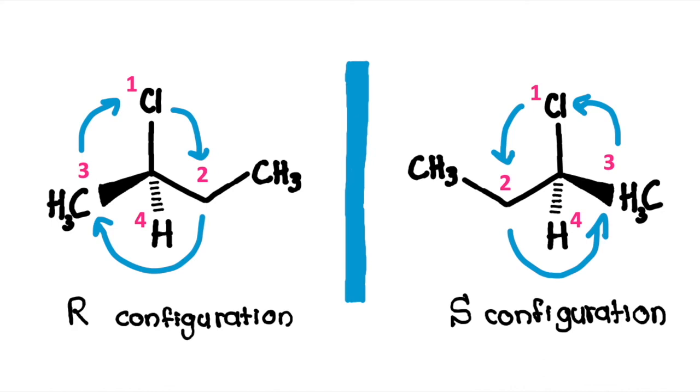Molecules with opposite configurations, that is S and R, at a chiral center are enantiomers.